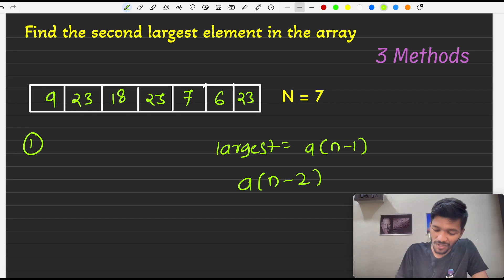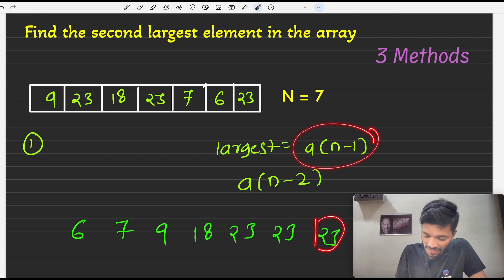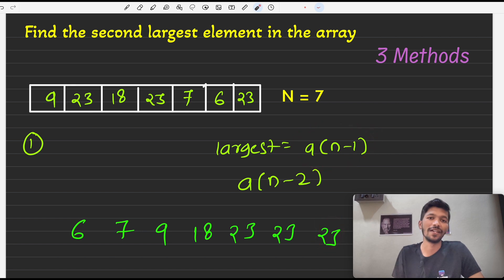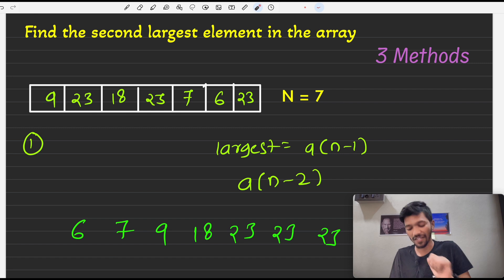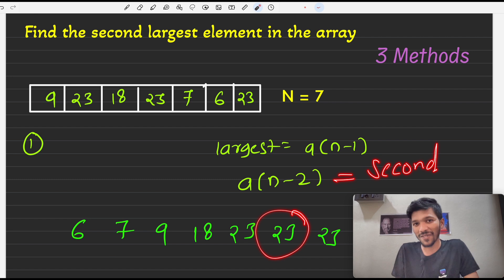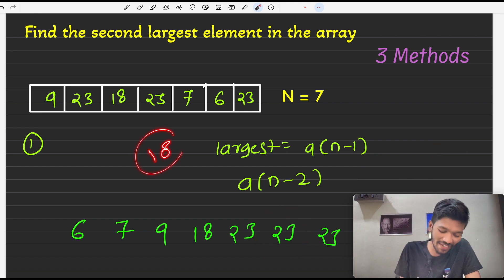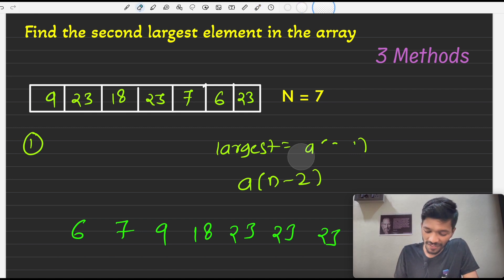If we sort the given array, it would look like: 6, 7, 9, 18, 23, 23, 23. We know that n minus one is the first largest element. Then we look at the second last element, which is again 23, and we might assume it as the second largest element. But is 23 the second largest element in the array? Absolutely not — 18 is the correct answer. So this is not a correct way to find the second largest element.